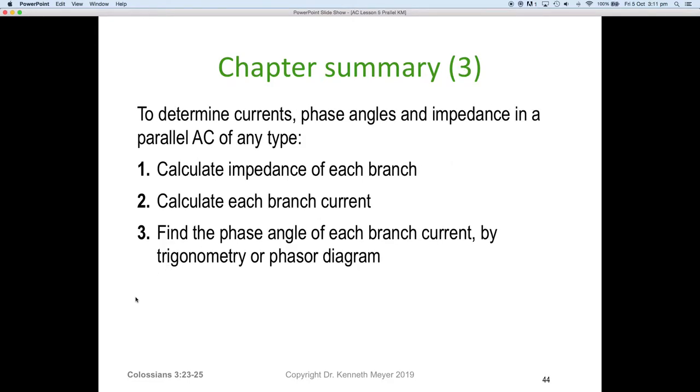To determine the currents, phase angles and impedances in a parallel AC circuit, we have to do three things. One, calculate the impedance of each of the branches. That's what you've got to do first. Make sure you work out the impedance of each branch. Then you can calculate the current in each of those branches, just Ohm's law, applied voltage divided by the impedance. And then three, find the phase angle of each branch by using trigonometry or a phasor diagram, depending on what information and data is available to you.